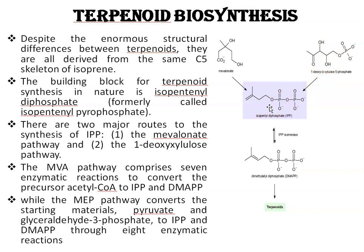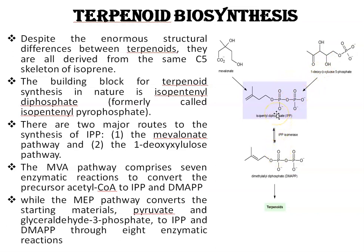The mevalonate pathway, or MVA pathway, comprises seven enzymatic reactions to convert its precursor acetyl coenzyme A to isopentenyl diphosphate (IPP) and then to dimethylallyl diphosphate (DMAPP). The non-mevalonate pathway converts its starting material — pyruvate and glyceraldehyde-3-phosphate — into IPP through eight enzymatic reactions. These two building blocks for terpenoid synthesis are then converted into different types of terpenoids.